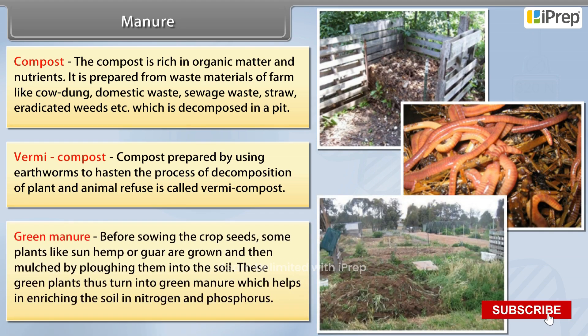Green manure: Before sowing the crop seeds, some plants like sunhemp or guar are grown and then mulched by plowing them into the soil. These green plants thus turn into green manure, which helps in enriching the soil in nitrogen and phosphorus.